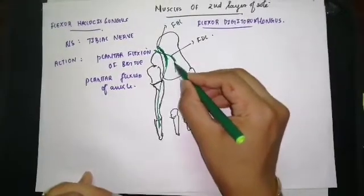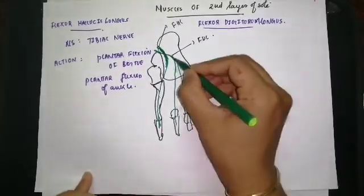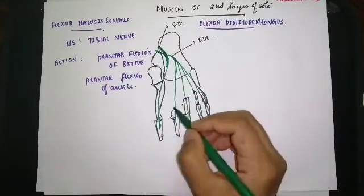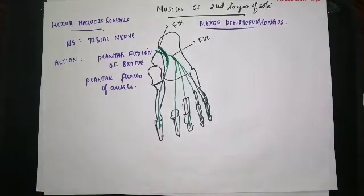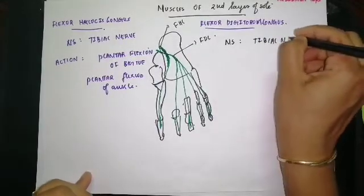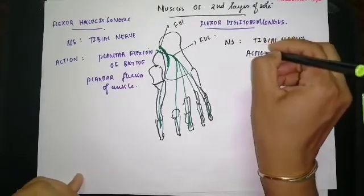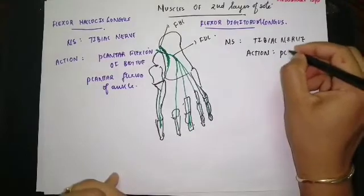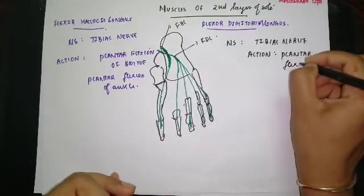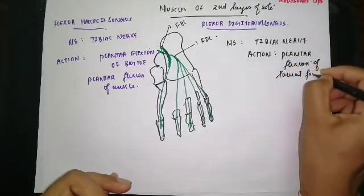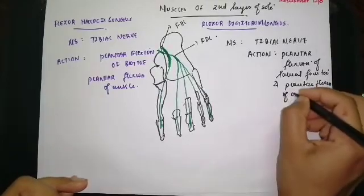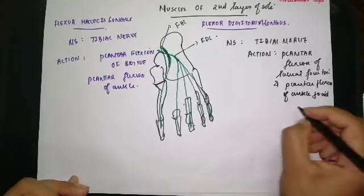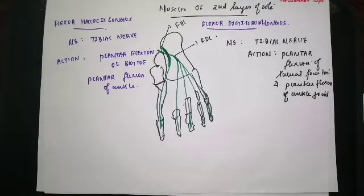The tendon of the flexor digitorum longus goes to each of the four toes and gets inserted into the plantar surface of the base of the distal phalanx of each toe. Its nerve supply, being a muscle of the posterior compartment of the leg, is also the tibial nerve. Its action is plantar flexion of the lateral four toes, plantar flexion of the ankle joint, and it also maintains the medial longitudinal arch.